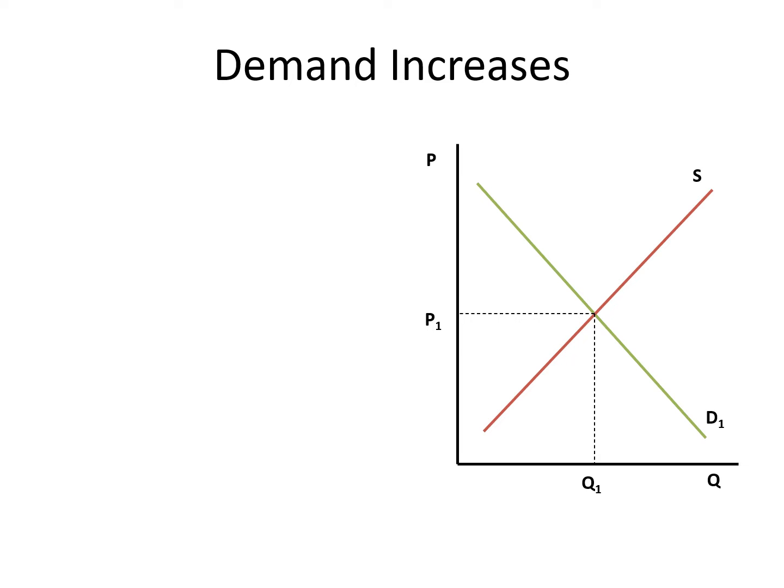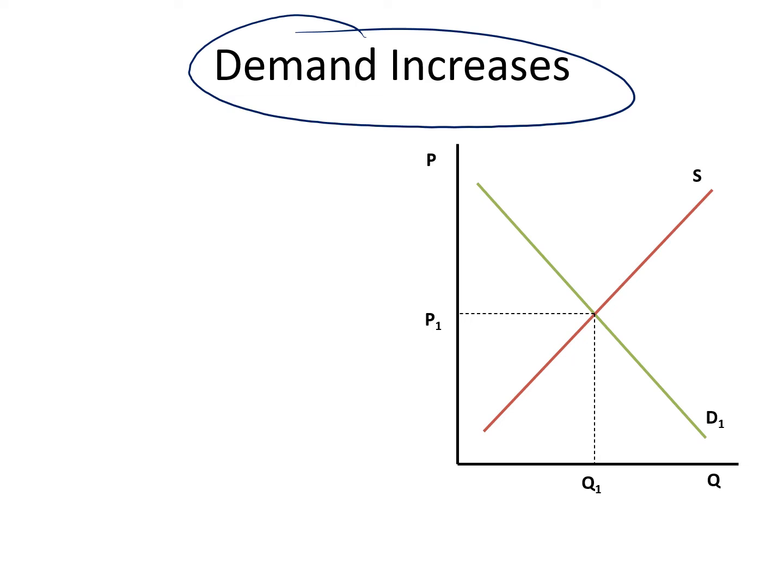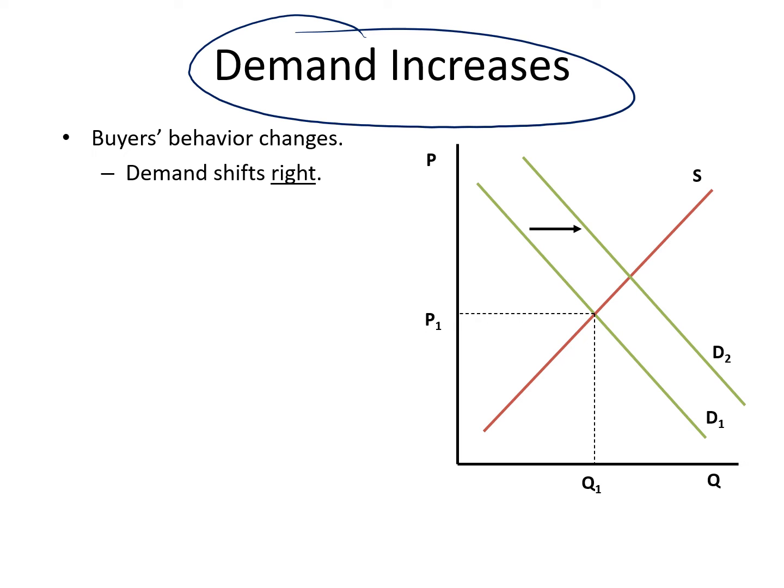Changes in market prices will occur as a result of changes in demand or supply conditions. When demand increases — for example because people's incomes have risen or the price of a substitute good has gone up — it causes the market demand curve to shift outwards to the right. As you can see in the diagram, we get a new demand curve and a new equilibrium point.